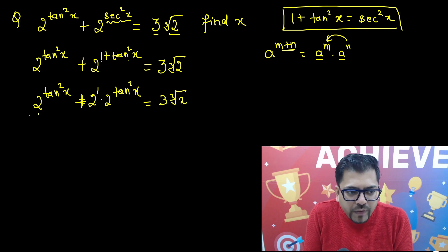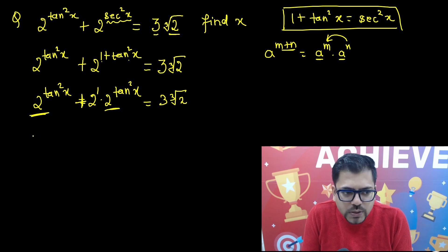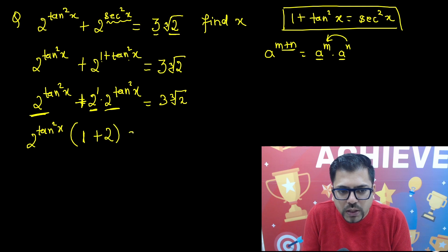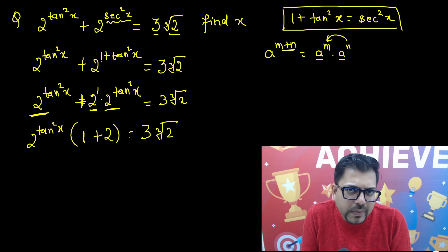Now very easily 2 raised to power tan square x is common. So 2 raised to power tan square x is common. What's remaining? So here nothing is remaining. So 1 plus here 2 raised to power 1 is remaining. So 2 equals to 3 times cube root of 2. So okay, now I'm getting some idea.